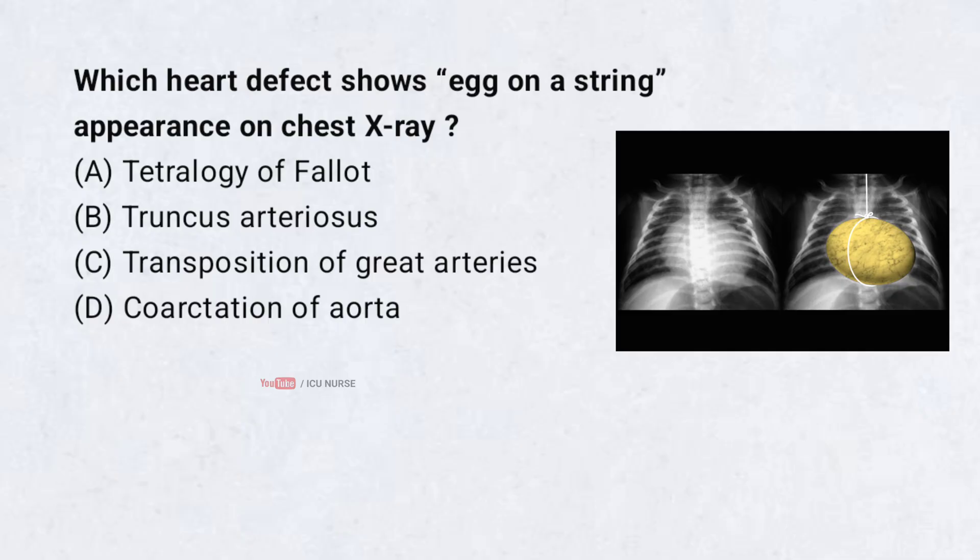Which heart defect shows an egg-on-a-string appearance on chest X-ray? A. Tetralogy of Fallot. B. Truncus arteriosus. C. Transposition of the great arteries. D. Coarctation of the aorta. Correct answer: C. Transposition of the great arteries.